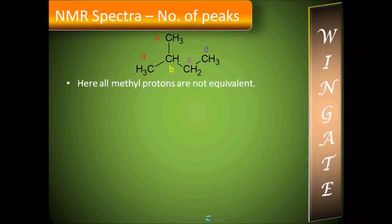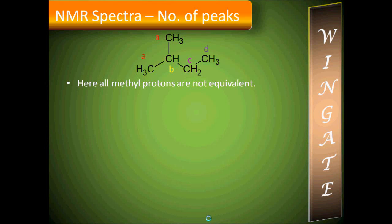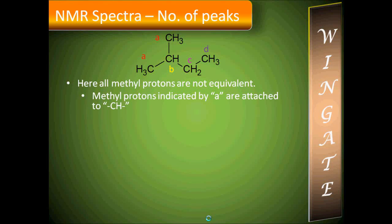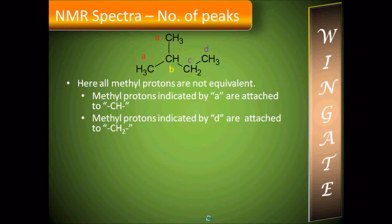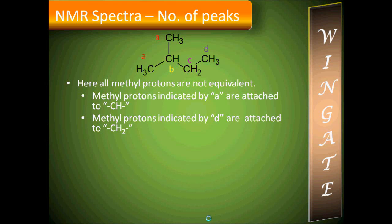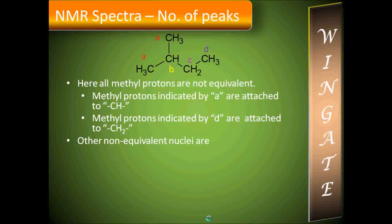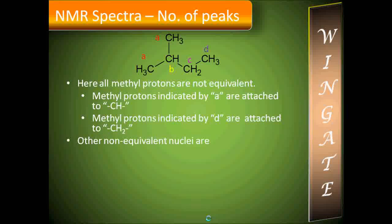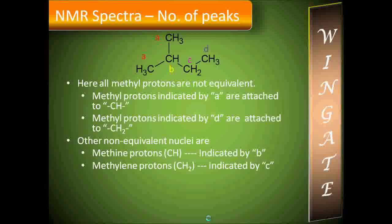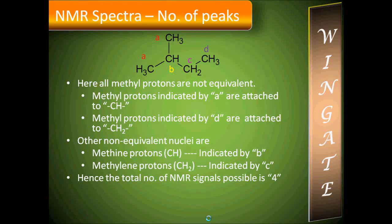Let us take another example where all methyl protons are non-equivalent. The methyl protons indicated by letter A are attached to CH, and the methyl protons indicated by D are attached to CH₂, so they are non-equivalent. Similarly, the methine proton indicated by B and the methylene protons indicated by C are also non-equivalent nuclei. The total number of NMR signals possible for this structure is 4.